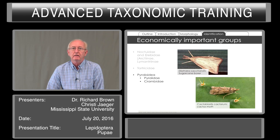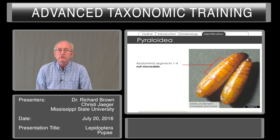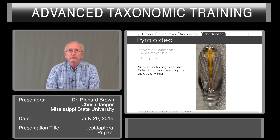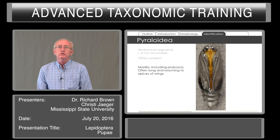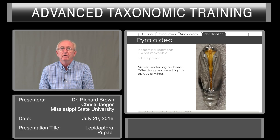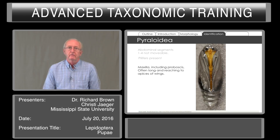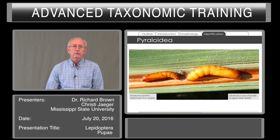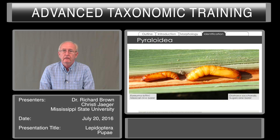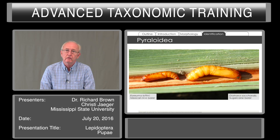Two families — Pyralidae and Crambidae. Abdominal segments are not movable, pilifers are present. The maxilla, including the proboscis, is often long and reaches to the apices of the wings, and you can see those structures going all the way to the ends of the wings. The Pyraloidea include some of the important pests that we are on guard for at our ports, so identification of the pupa within a plant product can be important for detection.